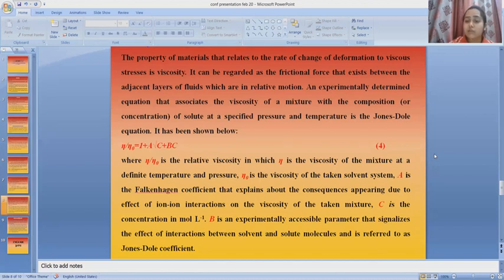A is the Falkenhagen coefficient that explains the consequences appearing due to the effect of ion-ion interactions on the viscosity of the taken mixture. c is the concentration in molarity, and B is an experimentally accessible parameter that signalizes the effect of interactions between solvent and solute molecules and is referred to as the Jones-Dole coefficient.